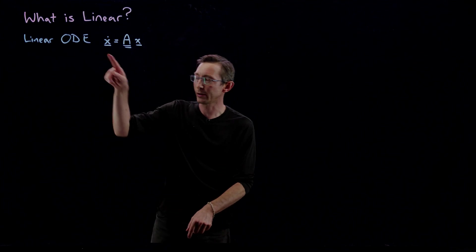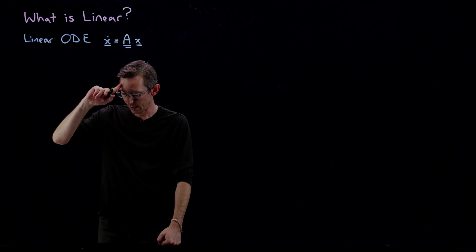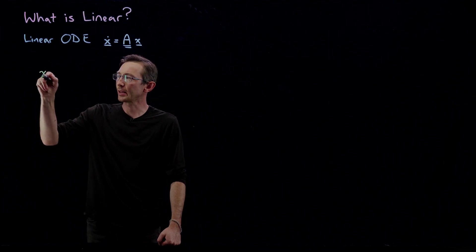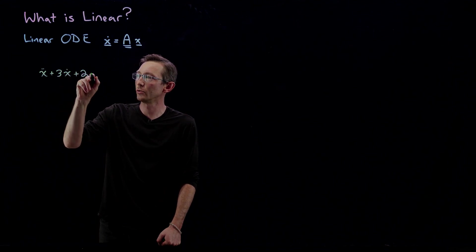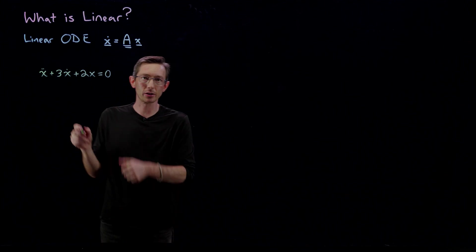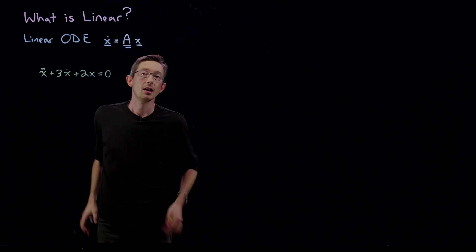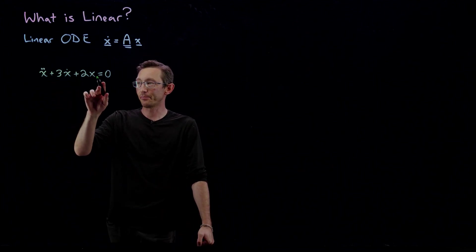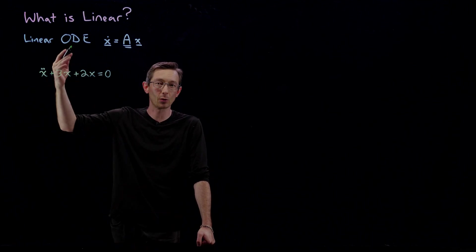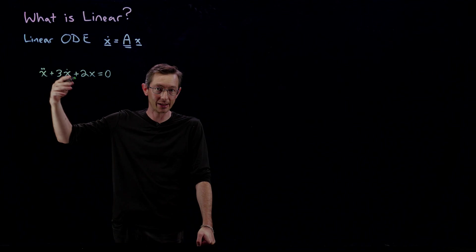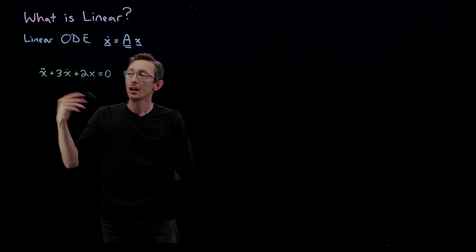I'll start with a simple example: x-double-dot plus 3x-dot plus 2x equals zero. We've looked at this differential equation before. I claim this is a linear differential equation because it's just x's and derivatives of x's multiplied by numbers — there are no x-squareds, no sines of x, no cosines of x, no non-linear functions of x or its derivatives.